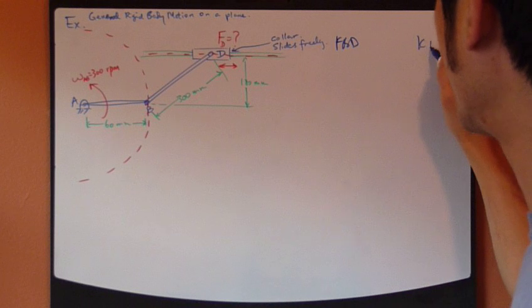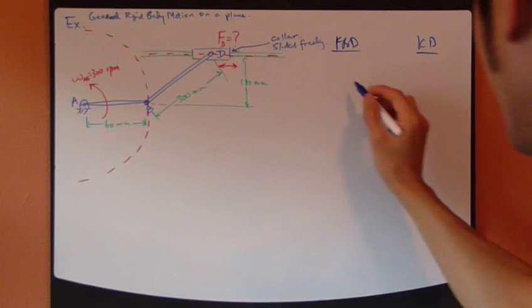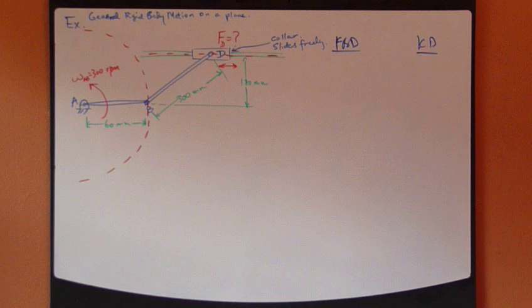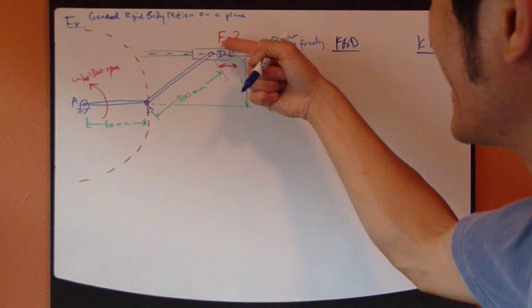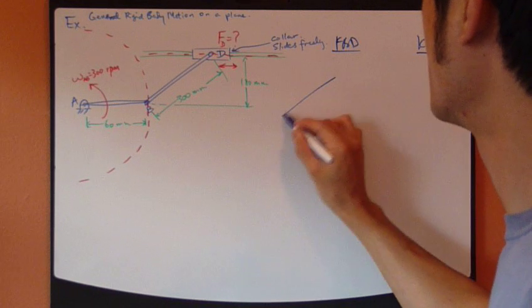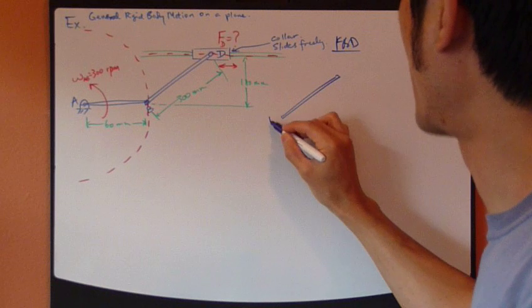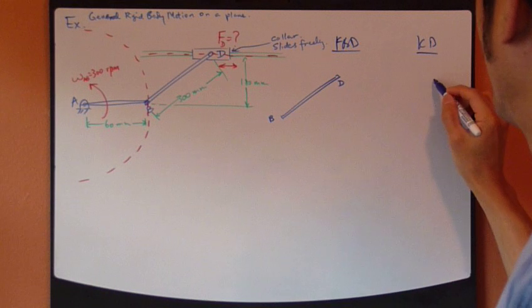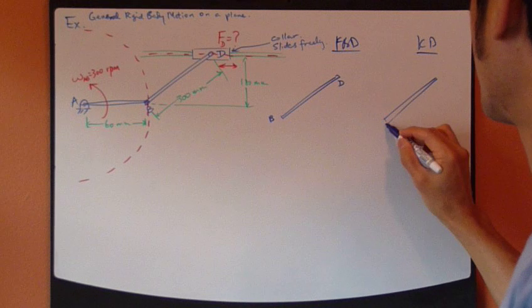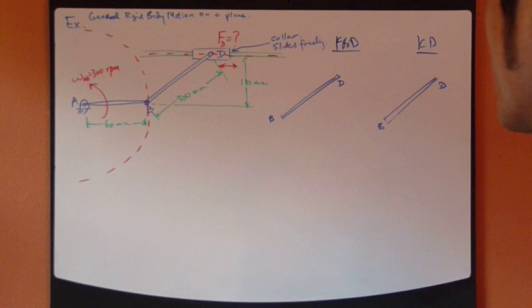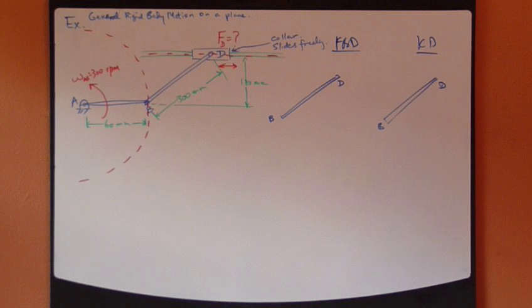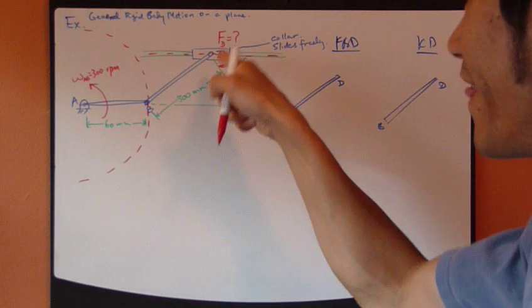So let's draw a free body diagram and then another diagram, the kinetic diagram for BD, because that's what we are interested in. Point D is what we want. So draw this rod BD at this instant and then kinetic diagram, same thing BD. For free body diagram, draw all the forces acting on it at this instant.